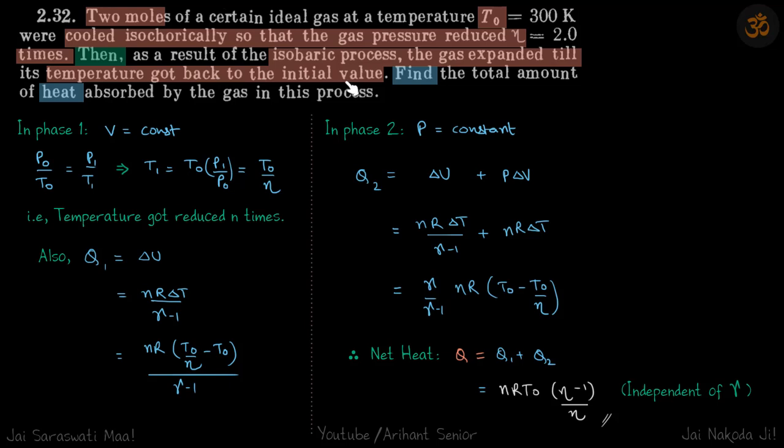So final temperature of second process is T0, and initial temperature of the second process is T0 by eta. So now we'll find Q2. Q2 is delta U plus P delta V because of isobaric process.